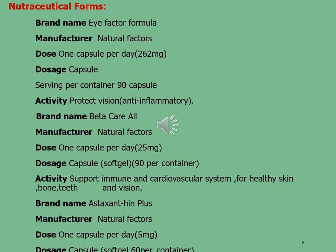Some important pharmaceutical brands that use carotenoids as food supplements: The first brand is Eye Factor Formula, manufactured by Natural Factors; dose 262 mg per day, formulated in capsules serving 90 capsules per container; activity is protective vision and anti-inflammatory. The second brand is Beta-Carotene All, also by Natural Factors; dose 25 mg per day, formulated in soft gel capsules; activity supports immune and cardiovascular systems, healthy skin, bone, teeth, and vision. The last brand is Astaxanthin Plus, also by Natural Factors; dose 5 mg per day, formulated in soft gel capsules; activity is antioxidant.